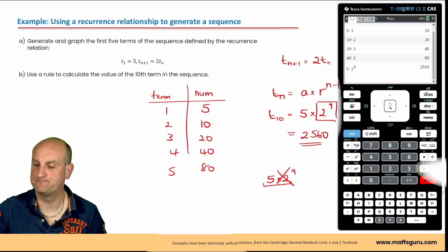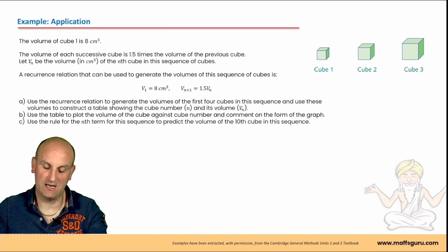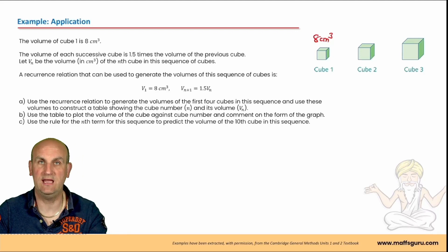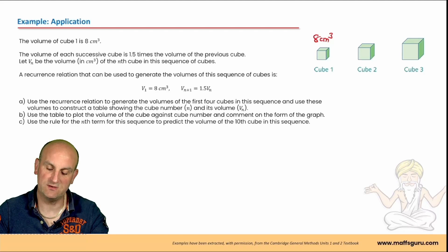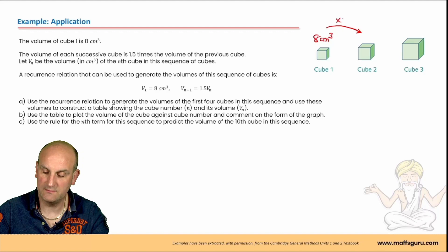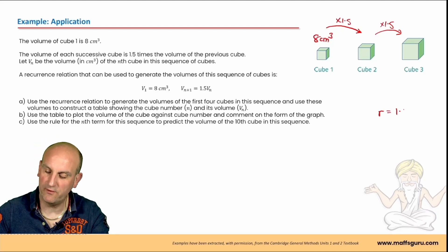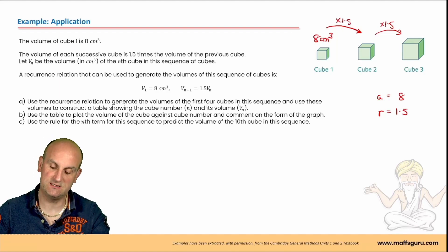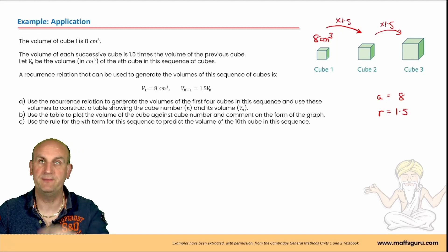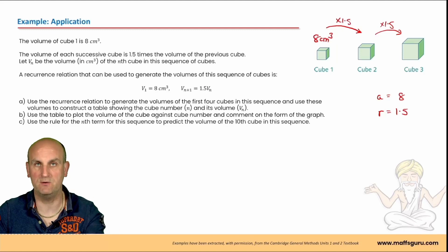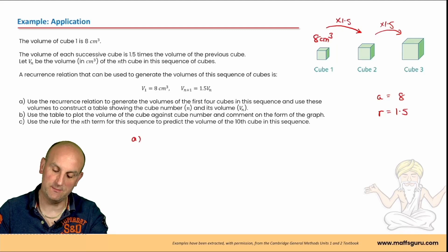Here's an application question. The volume of cube 1 is 8 cm³. The volume of each successive cube is 1.5 times the volume of the previous cube, so the common ratio r = 1.5 and first term a = 8. Writing the recurrence relationship: v1 = 8, v(n+1) = 1.5 × v(n). That multiplier of 1.5 is our common ratio applied to the previous volume.